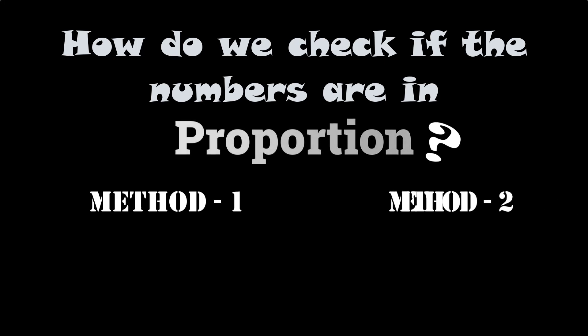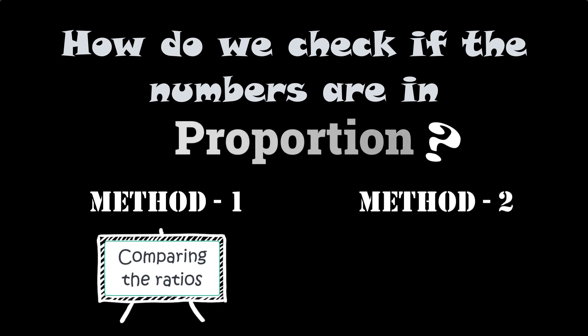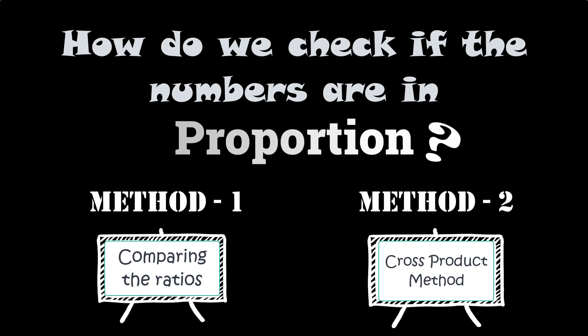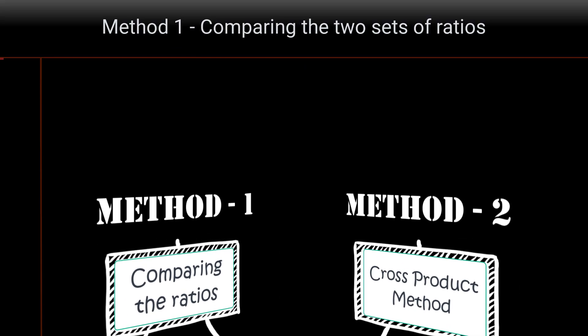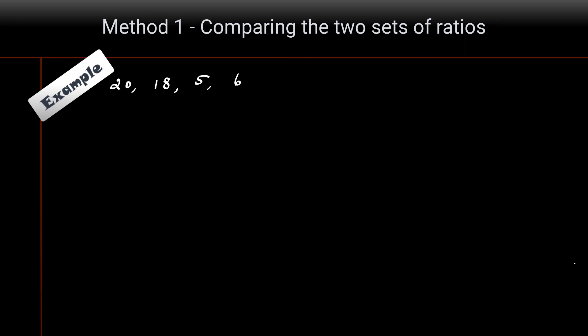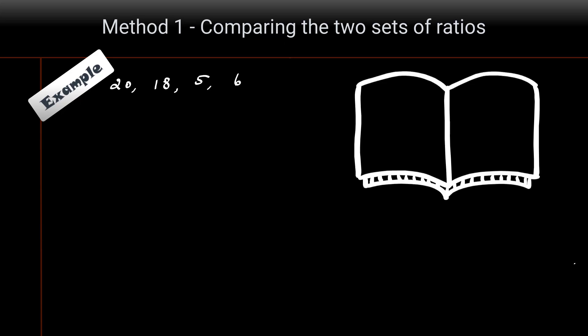How do we check if given numbers are in proportion? It's done using two methods. Method one is by comparing the ratios. Method two is by using the cross product method. Let me explain these two methods with an example. We have four numbers: 20, 18, 5, and 6.